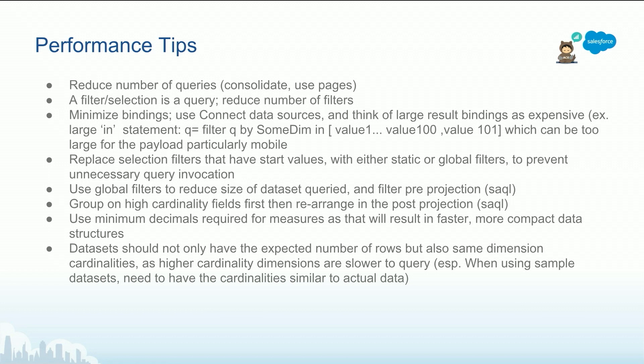Data sets should not only have the expected number of rows, but also the same dimension cardinality. Sometimes when we have big volumes of data in production — we're talking about 50 million, 100 million rows and above — customers bring a sample of those to the sandbox. That sample, when you go above 100 million rows, might happen to be just random and the same state, and it doesn't have the same mix of cardinality across 10 or 15 fields. So that can affect testing — you want to bring a good sample to the sandbox.